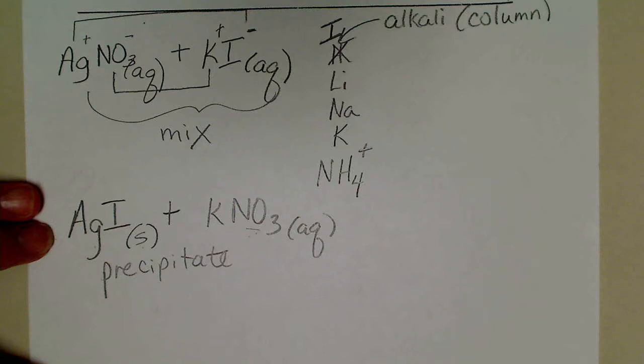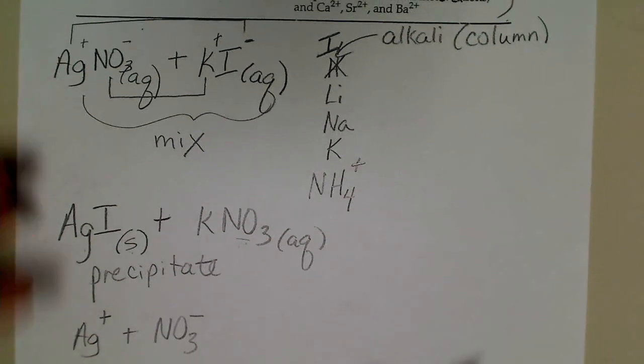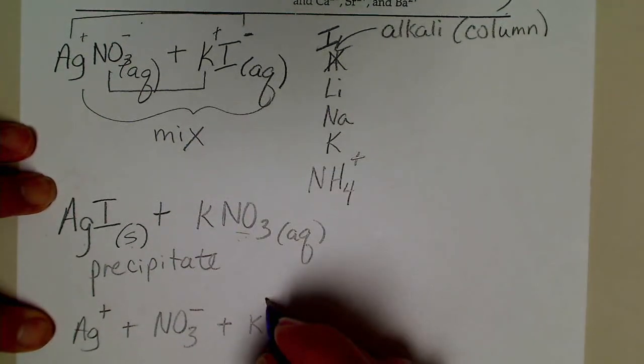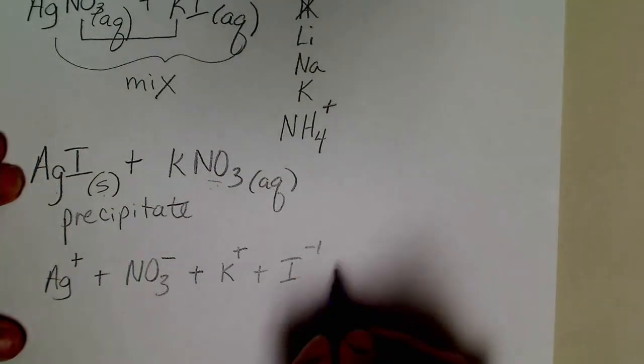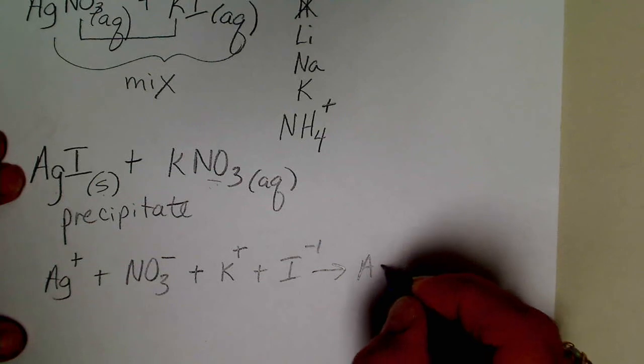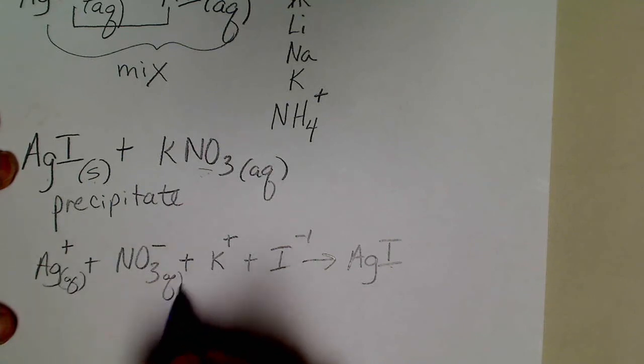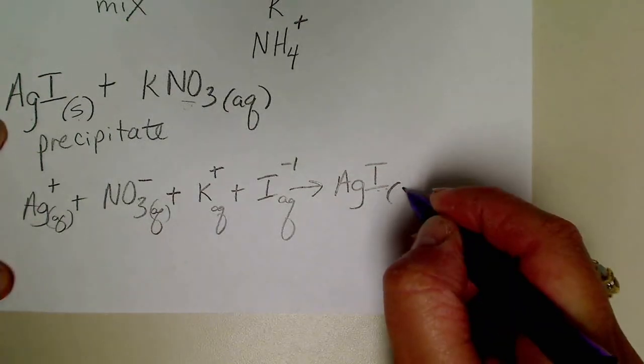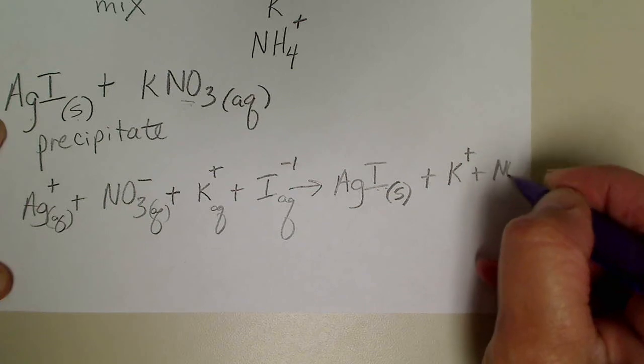If we wrote out the complete ionic equation, we have a silver ion plus a nitrate ion from the silver nitrate that's in solution, and then we added the KI solution, so potassium ion here and the iodide ion is here. And we saw the formation of a solid AgI. We would not write (aq) here - in fact, we should write (aq) by each one of these species. We would not write (aq) here because the solid formed here, so that would be an S.